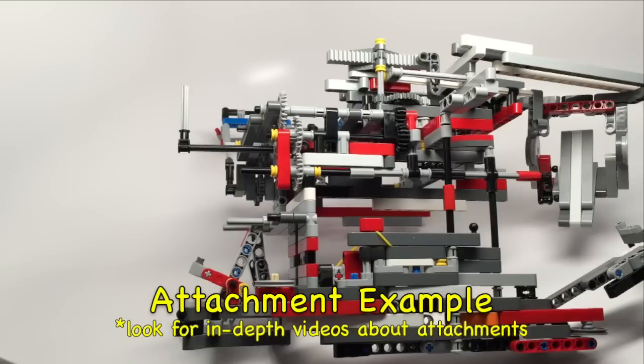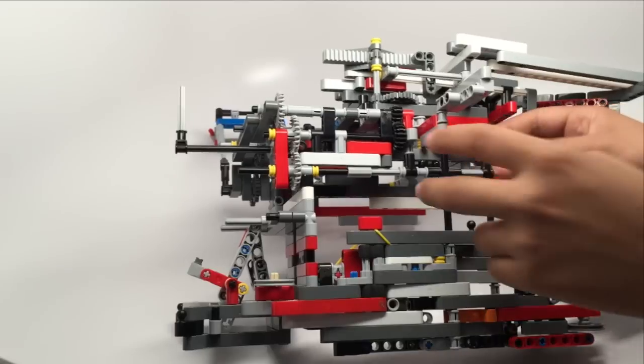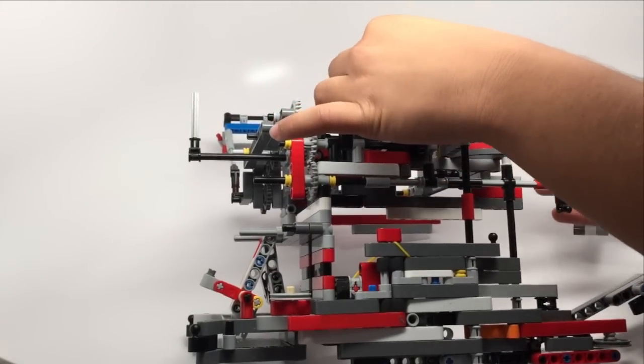This is an attachment we used in FLL in the world class season, which uses a lot of gear, so we're showing it as an example. Over here is a rack and pinion system, so when it spins, it pulls this switch.